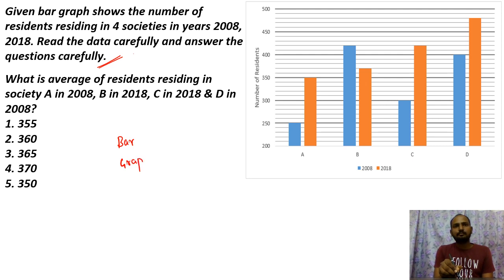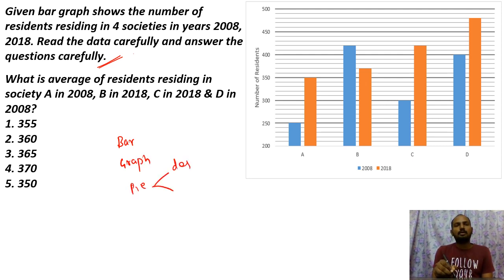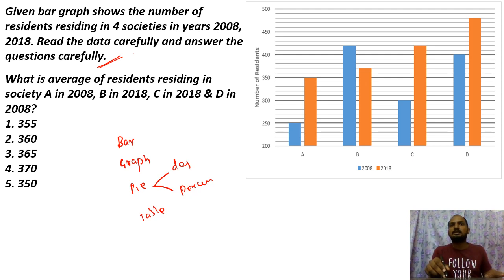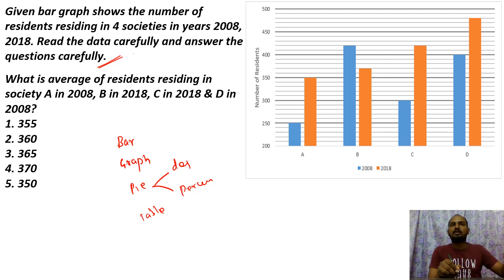Chart types include graph, pie chart — which has two subtypes: degree and percentage — and lastly, table chart. If you look at this data, you can select bar chart or graph chart based on the values. In pie chart, we separate the total value.